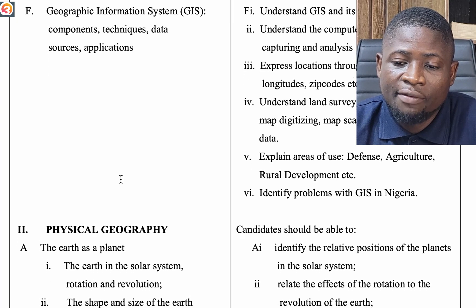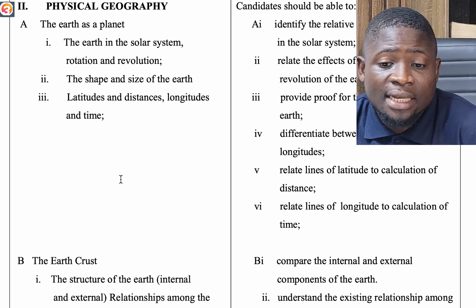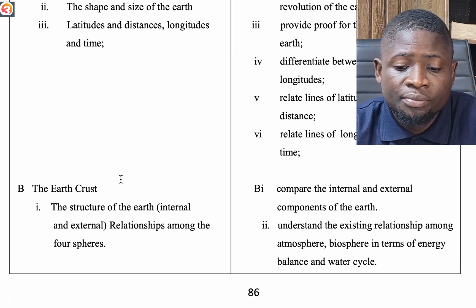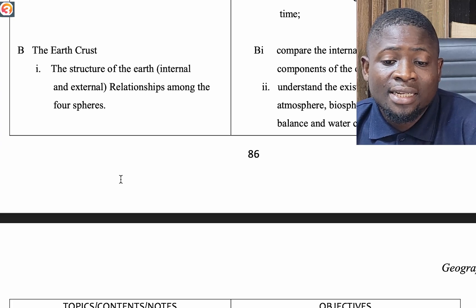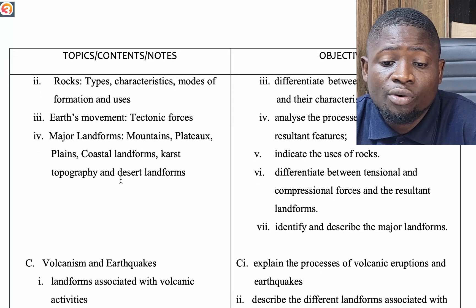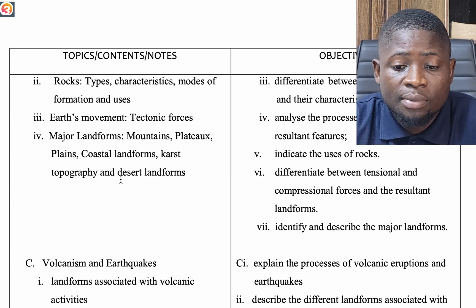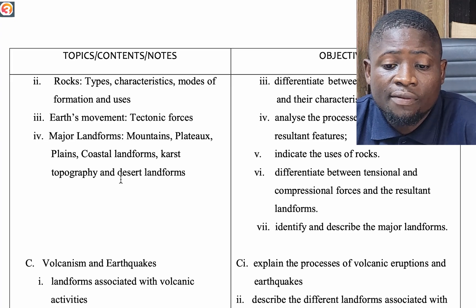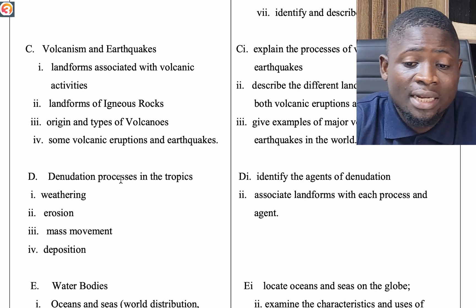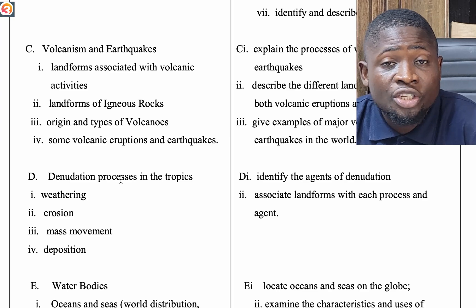The second topic is Physical Geography. We consider the earth as a planet: its position in the solar system, rotation, revolution, shape and size, latitudes and distances, longitudes and time. Then the earth's crust: structure of the earth, internal and external relationships among the layers. We look at rocks — types, characteristics, modes of formation, and uses. Then earth movements and tectonic forces, major landforms including mountains, plateaus, plains, coastal landforms, karst topography, and desert landforms. We also cover vulcanism and earthquakes, landforms associated with volcanic activities, origin and types of volcanoes, and volcanic eruptions.